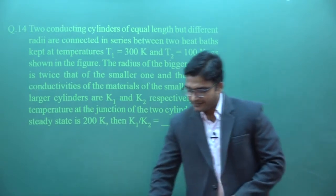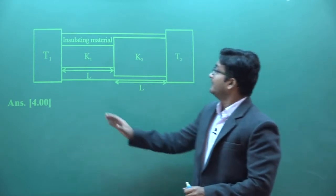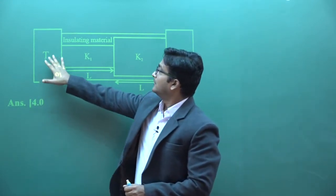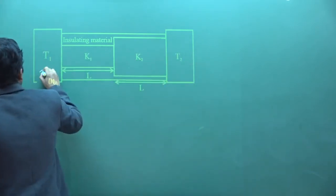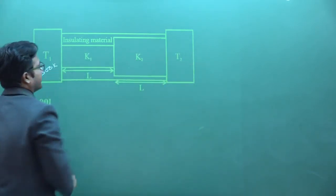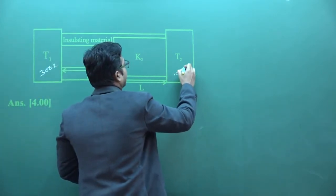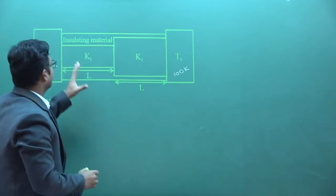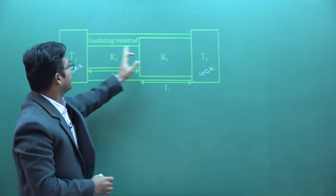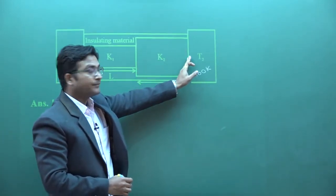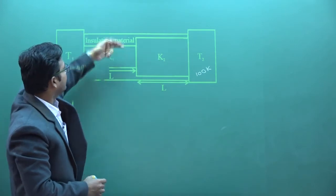The next question involves a box at temperature T1 = 300 Kelvin, and another box at 100 Kelvin. We have connected both with two rods: one rod has conductivity K1 and the other has conductivity K2. Both rods are in steady state and are covered with insulating material so there is no heat loss.